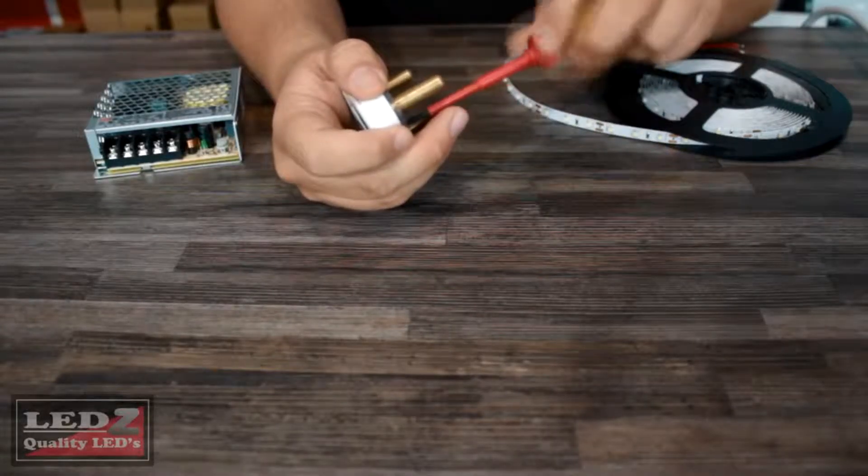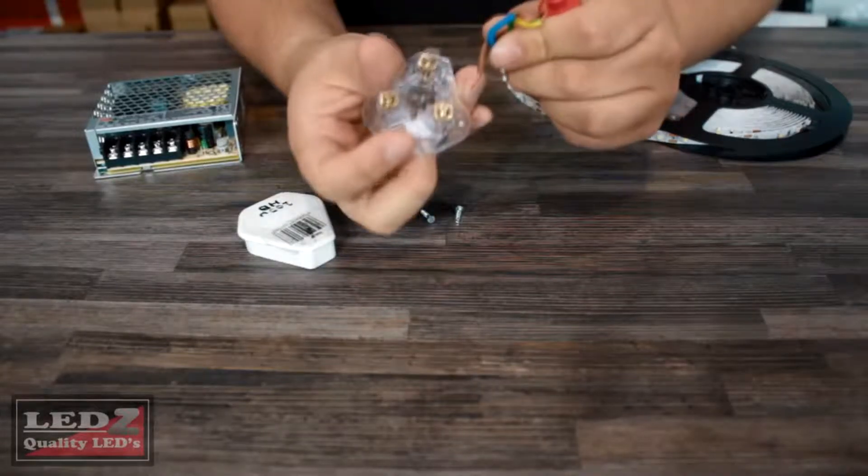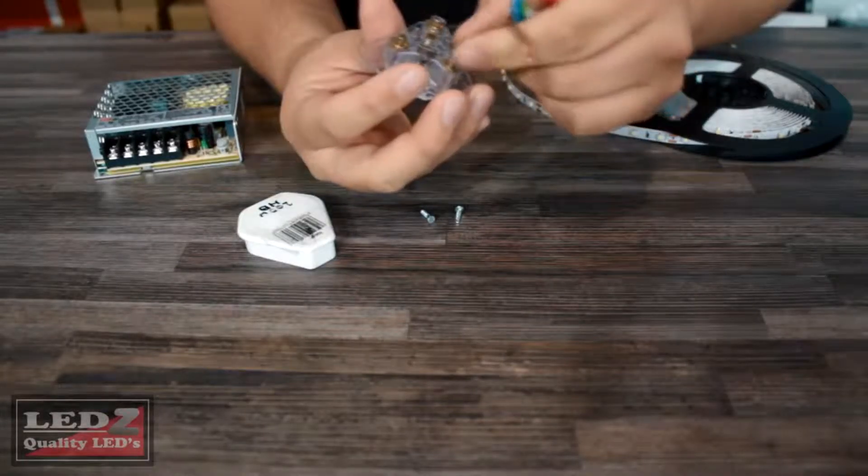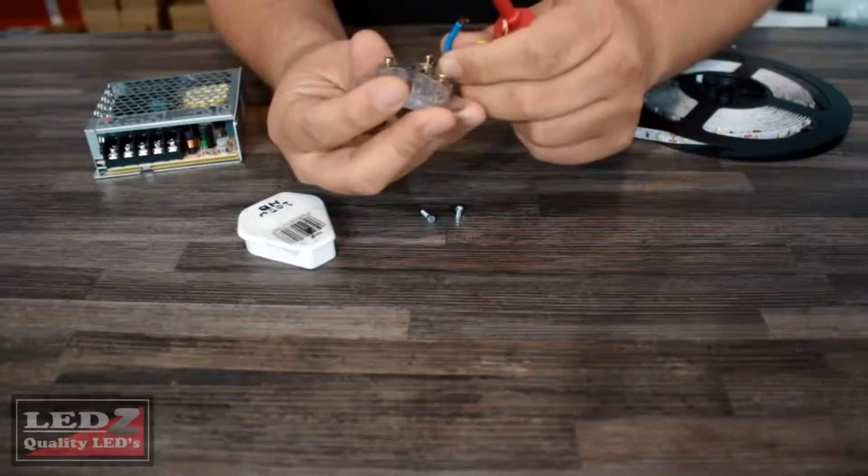To open the plug, all you need to do is just remove the two screws on the back. Once the plug has been opened, loosen the screw on the live side, slip in the brown cable which is your live, and tighten the screw making sure it's secure.